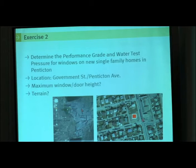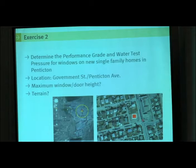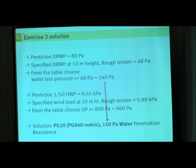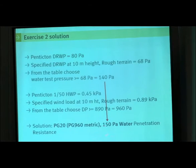Here's another example of another building — in this case a clear case of rough terrain. You go from the basic data provided in the code to a performance grade for the fenestration products.